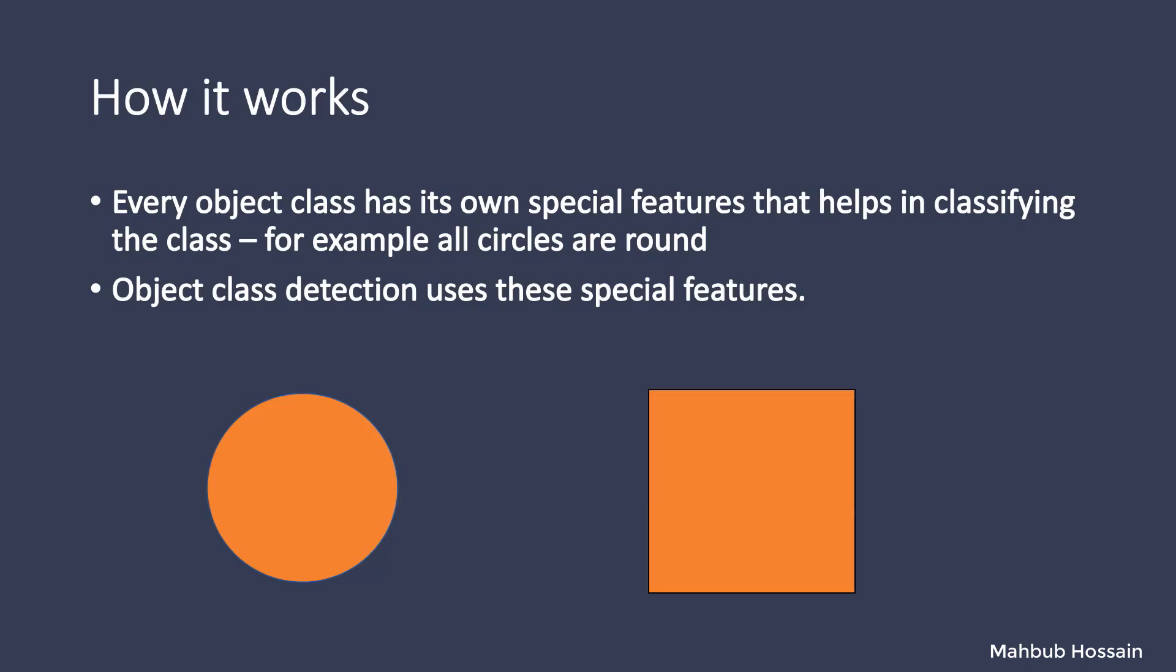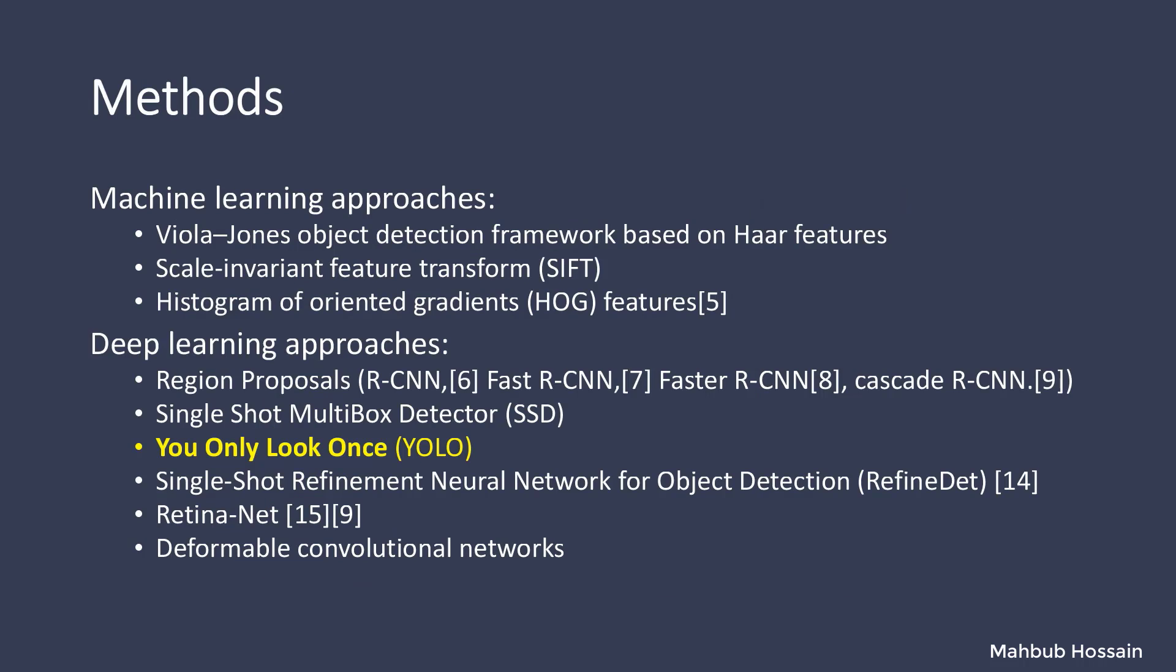Each object has some quite distinctive features. Object detection exploits these features. For example, all circles are round. When looking for squares, objects that are perpendicular at corners and have equal sides lengths are needed. There are lots of methods for object detection, but for this presentation we are interested in You Only Look Once, which is known as YOLO algorithm. Thank you everyone, my partner Raihan will present the next part.